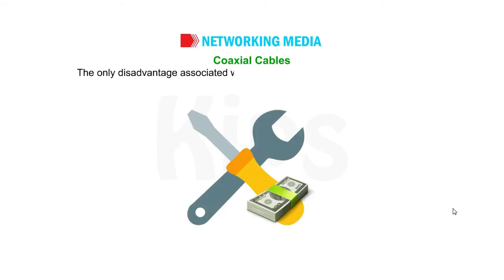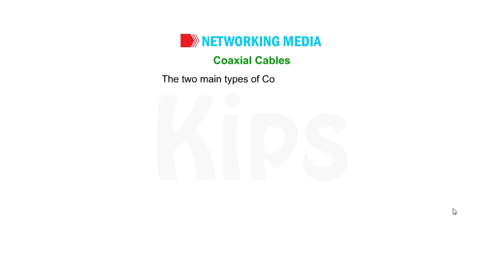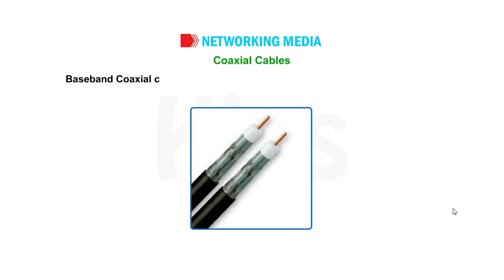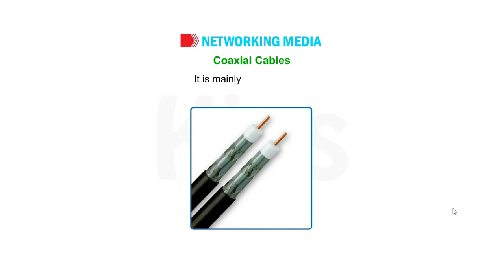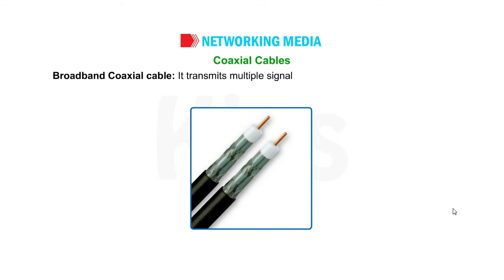The only disadvantage associated with coaxial cable is its high installation and maintenance cost. The two main types of coaxial cable are: Baseband coaxial cable, which supports quick transmission of a single signal at a time and is mainly used for LANs; and Broadband coaxial cable, which transmits multiple signals at the same time and is used for longer distances.